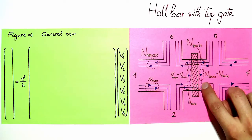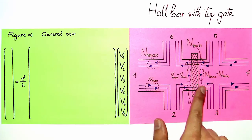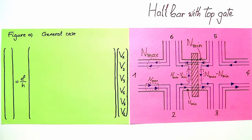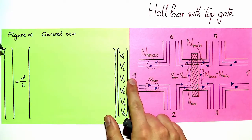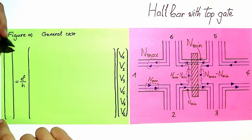So along the top gate, n_max minus n_min modes are transmitted to the other side of the Hall bar. We write down the transmission matrix. The current is just as before: we have +I at contact 1 and -I at contact 4, and everything else is 0.